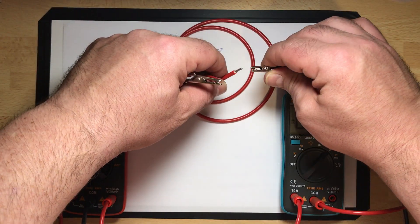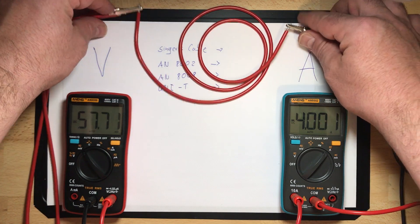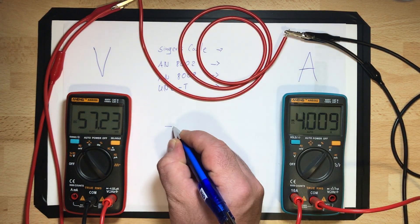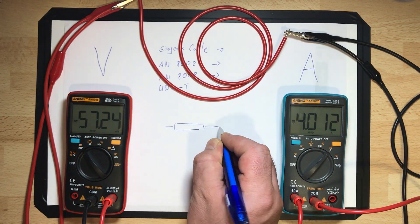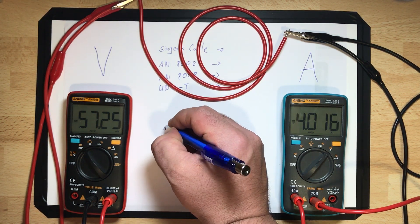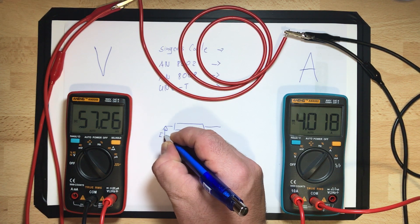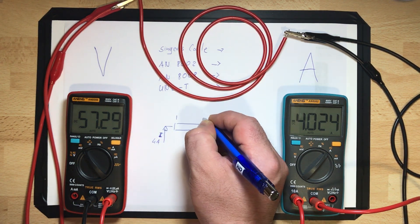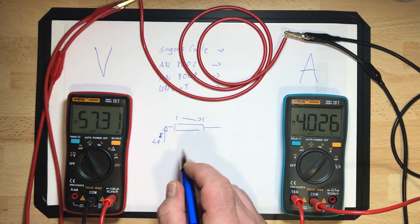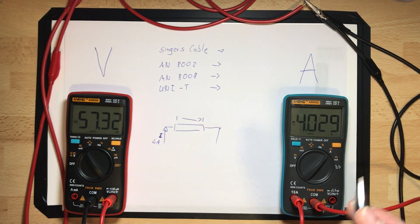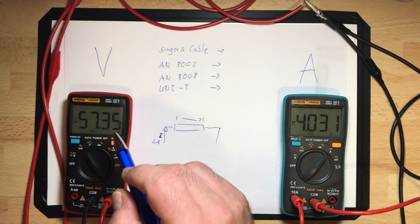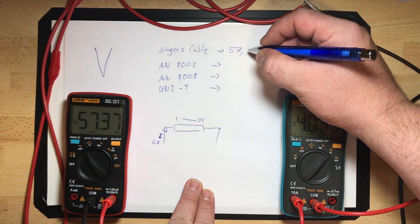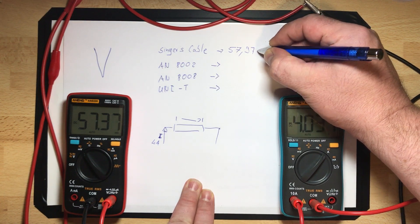I'll make a short circuit with it. At the short circuit I have maximum amps, and when amps go through a cable, the cable has a resistance. I will measure how many millivolts will drop over the cable because the cable is nothing else than a resistor. With Singer's cable I got 57.37 millivolts.